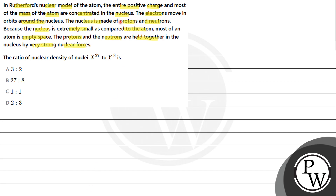So basically, this is a big paragraph, and on this basis there is a question here. The question says: the ratio of the nuclear density of nucleus X, whose atomic mass is 27, to Y, whose atomic mass is 8.